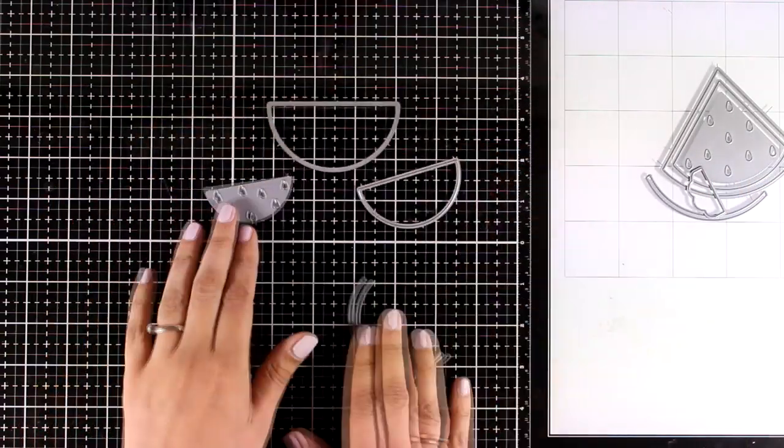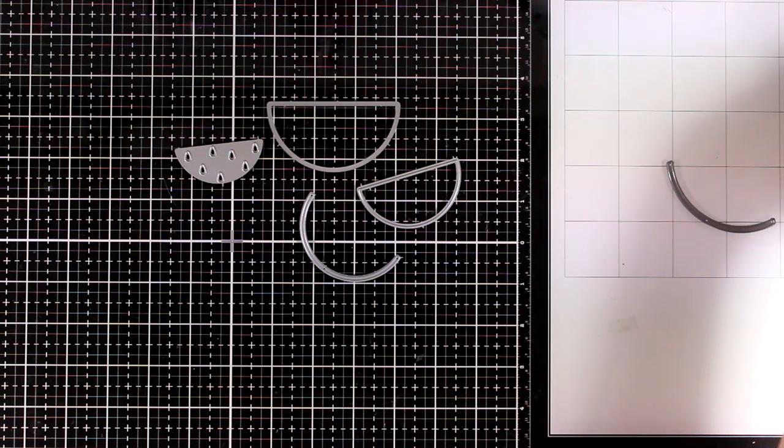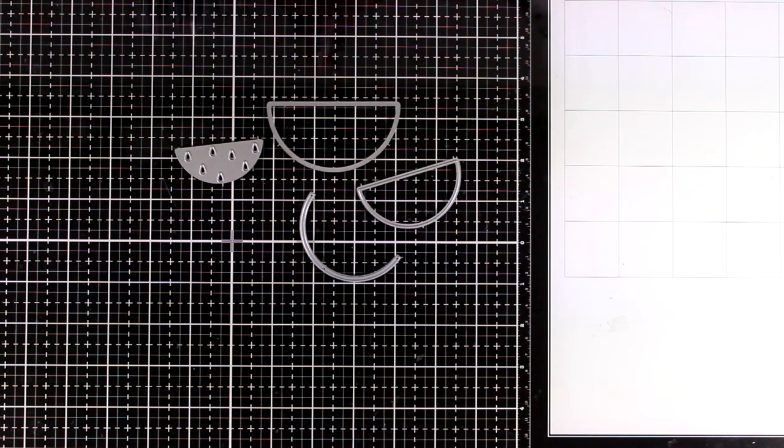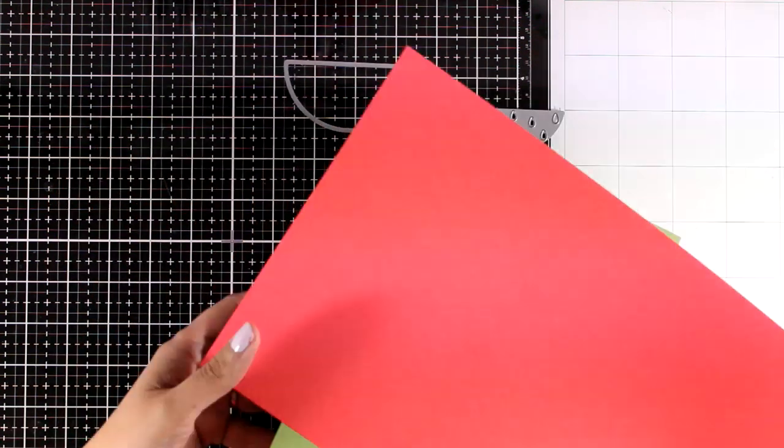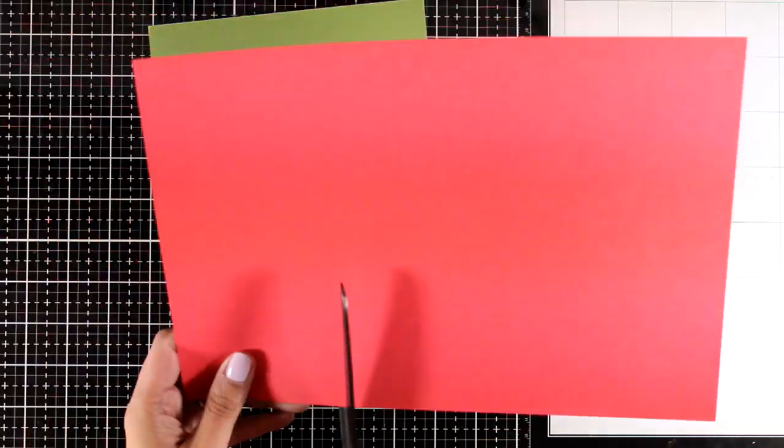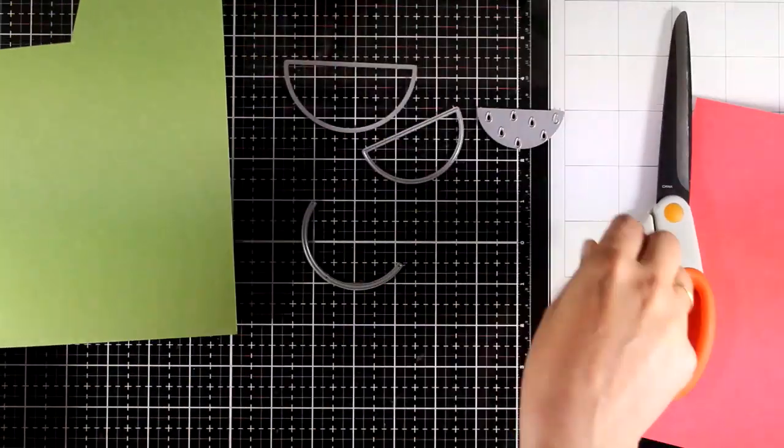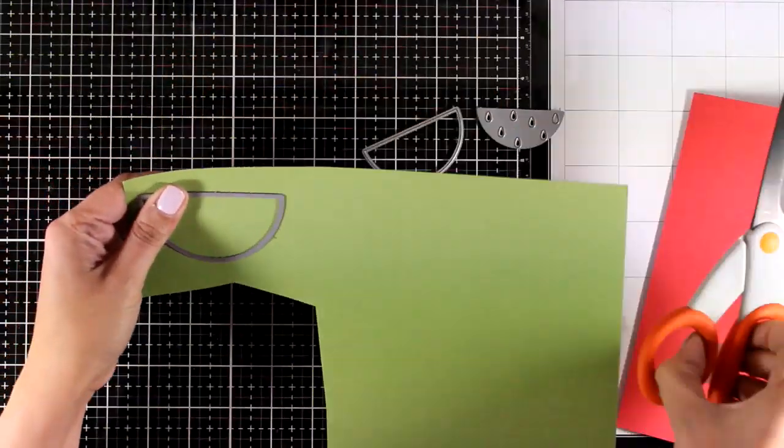There are nine dies included in this die set, and you can use them to create either a half circle of a watermelon or a quarter circle. I'll be using these four dies for all the cards.